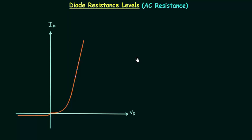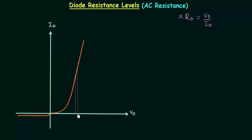If we apply an AC input in place of DC input, the varying input will move the instantaneous operating point up and down. In case of DC input, the DC resistance is simply equal to Vd by Id. But in case of AC resistance, the input will vary and the voltage and current will not remain the same, so we cannot use this equation. DC resistance is also called static resistance and AC resistance is also called dynamic resistance.